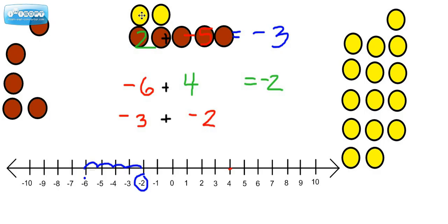Alright, now did you know that for every yellow chip, a red one is canceled out? It's kind of like if you take one step forward and one step back, you haven't really gotten anywhere.